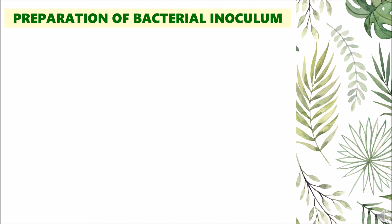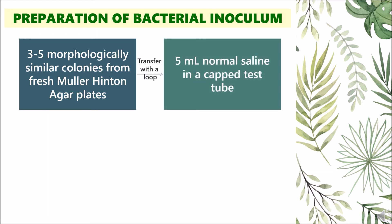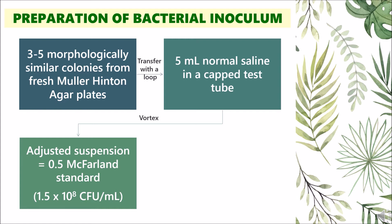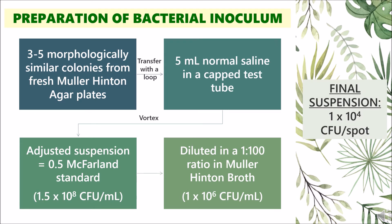The bacterial inoculum was prepared using the direct colony suspension method. Three to five morphologically similar colonies from fresh Muller-Hinton agar plates were transferred with a loop into about 5 ml of normal saline in a capped test tube and then vortexed. The suspension turbidity was adjusted to be equivalent to a 0.5 McFarland standard, giving approximately 150 million colony forming units, or CFU, per ml. The adjusted colony was then diluted 1:100 in Muller-Hinton broth to give a colony suspension of 1 million CFU per ml, with a final suspension concentration of 10,000 CFU per spot.